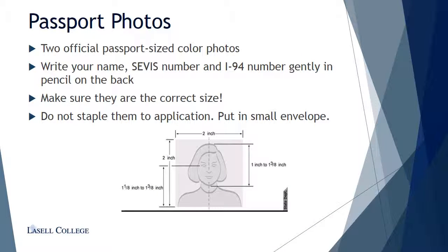You will need to provide two official U.S. passport-sized color photos. Make sure they are the correct size. You must write your name, SEVIS ID number, and I-94 number on the back of both photos gently in pencil. Do not staple the photos to the application. Place the photos in a small envelope and use a paper clip to attach it to the application.